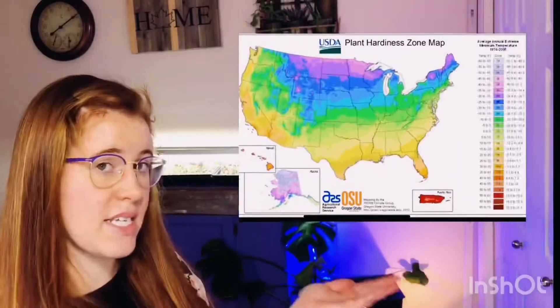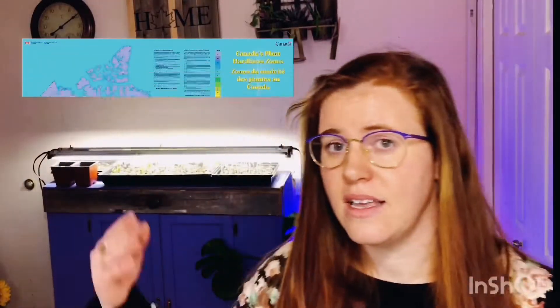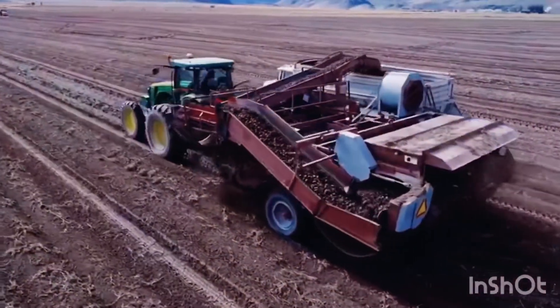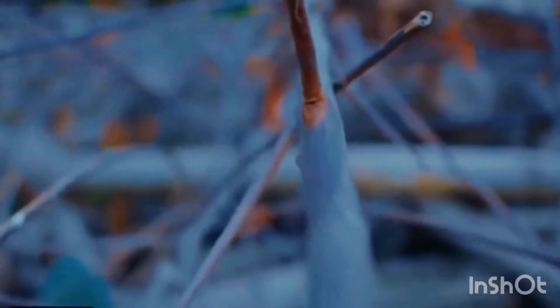Every country has their map, but for this video we're just going to be focusing on the USDA map and the Agriculture and Agri-Foods Canada map. Zones are essentially specific climatic conditions that exist within the region — based on topography all the way to precipitation and snow cover. The country maps are very broad and generalized; they're meant to help farmers decide what crops to plant and environmentalists decide how an ecosystem is performing.